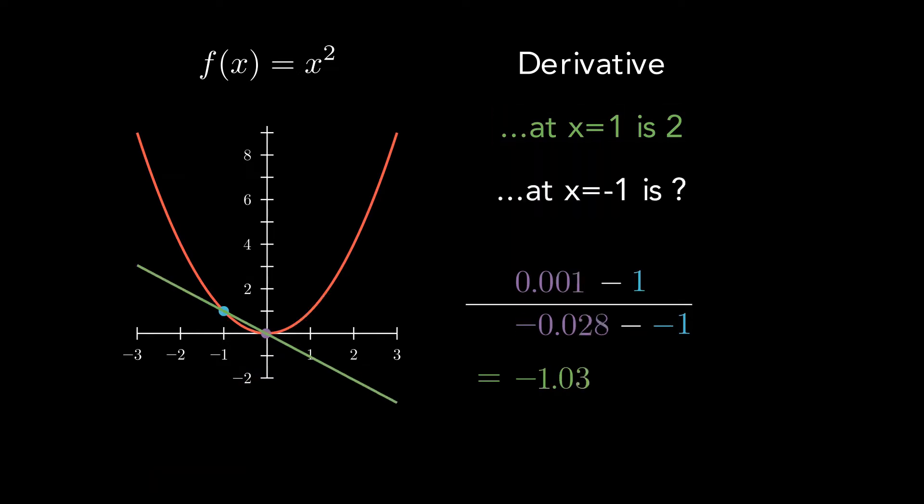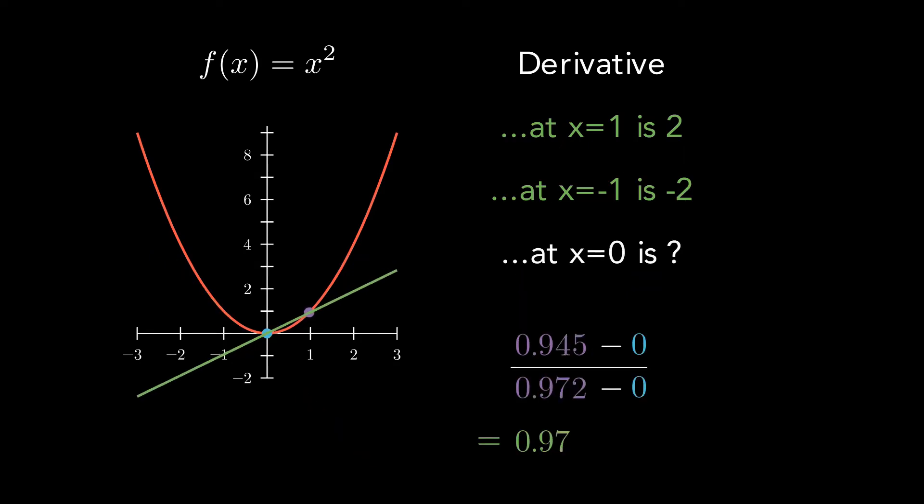If we do the same thing at x equals negative 1, we can see that the slope is negative 2. Let's repeat this process at a couple more points.